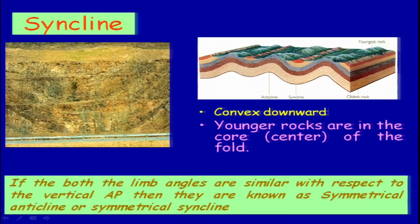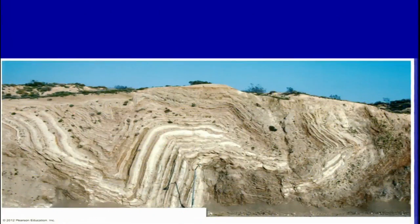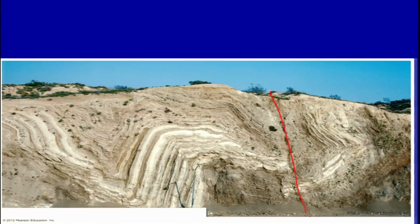If both limb angles are similar with respect to the vertical axial plane, they are known as symmetrical anticline or symmetrical syncline. This is another example of the section — you can identify how syncline and anticline look, and as I told, they go side by side. You will have anticline, you will have syncline, and you will also have fractures or faults here. You can identify if there is movement along these faults on the surface manifestation.